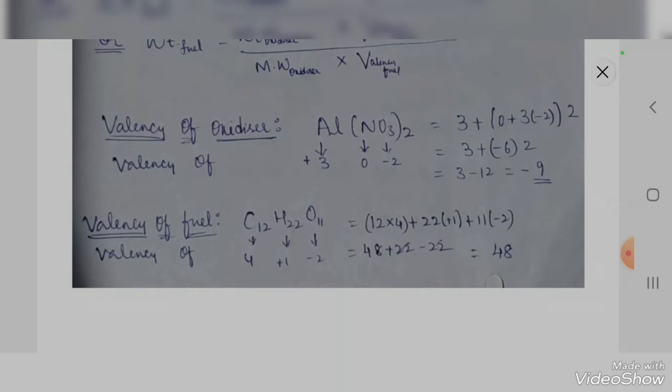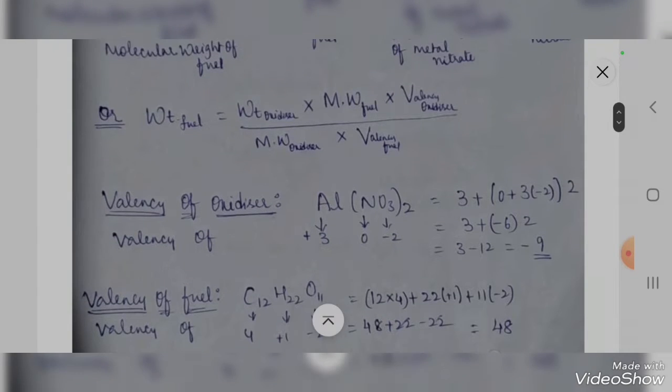The valency of the fuel — sugar, C12H22O11 — is calculated as follows: carbon valency is +4, hydrogen valency is +1, oxygen valency is −2. So: 12 × 4 = 48, plus 22 × 1 = 22, plus 11 × (−2) = −22. The +22 and −22 cancel, giving us the valency of the fuel as 48.